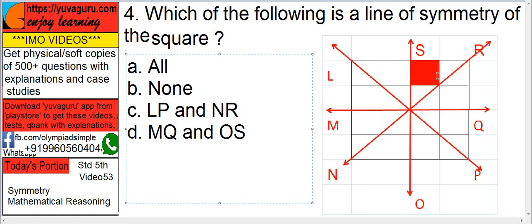But in this question the answer is 0 — none. Because of this red square. If you fold it from anywhere, this red square does not come on the other side. That is why the answer is 0.